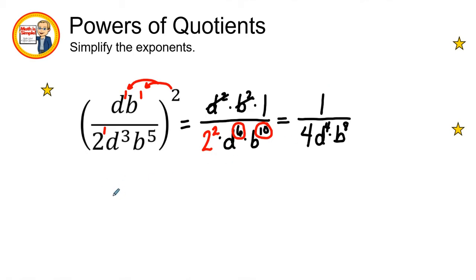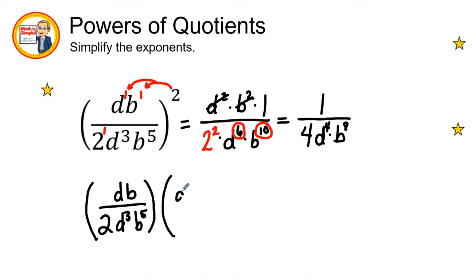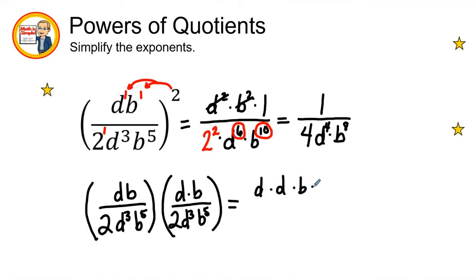Let's also do this a second time by expanding — this might be easier for some of you. We duplicate what's inside the parentheses twice: db over 2d³b⁵ times db over 2d³b⁵. In the numerator we have d times d times b times b. In the denominator we have 2 times 2 is 4, d to the third power twice, and b to the fifth power twice.